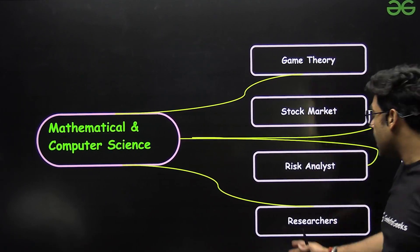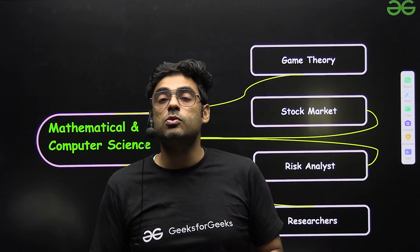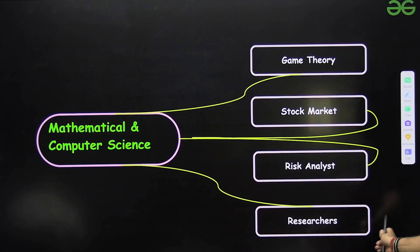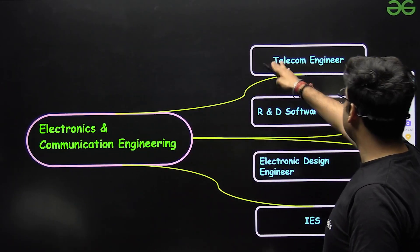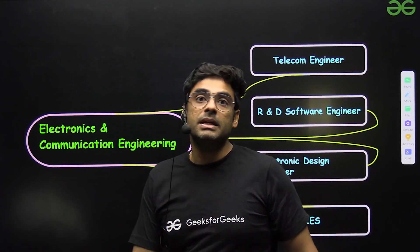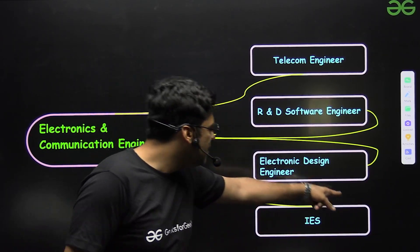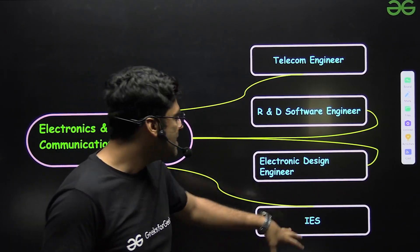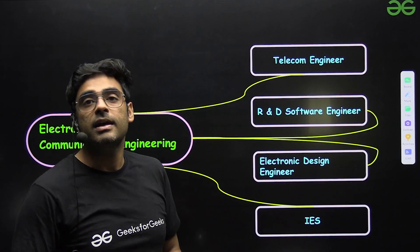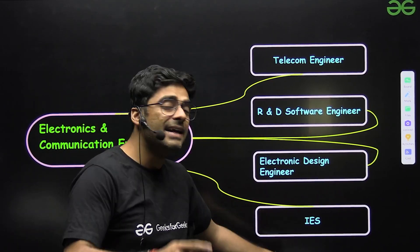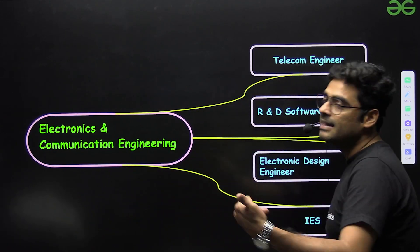For electronics (EC): telecom engineer, R&D software engineer, and electronic design engineer. IES is also listed — people are giving less focus to IES and the population is shifting more towards corporate, which is actually an advantage for you since competition decreases even though seats are fewer. For electrical engineering: power engineer, public sector engineers in PSUs, and robotics engineer — electrical engineers are heavily recruited in robotics for PLCs and controllers.